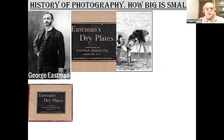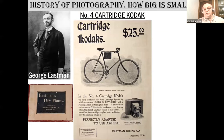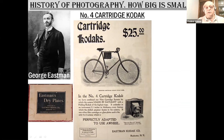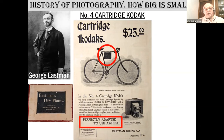George Eastman also created a company named Kodak, and they produced different cameras. This particular camera, Kodak No. 4 cartridge, was marketed as a very small camera. Why small? Because you did not need a horse, you did not need a tent — all you needed was just a bicycle. The camera was easily hooked up to the bicycle and, as they said, it was perfectly adapted to use on a wheel.